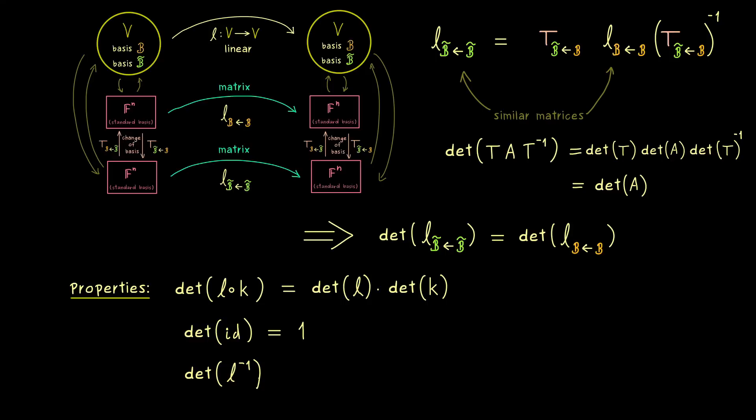And now by combining this with the formula above, we also get something for invertible maps. Namely, it tells us that we can pull out the inverse as for matrices. So these are important formulas you can immediately remember.